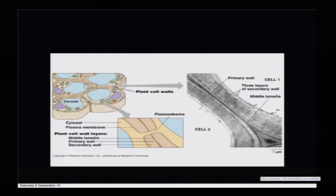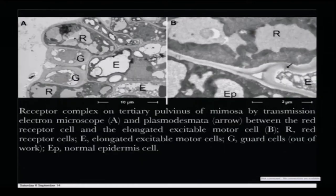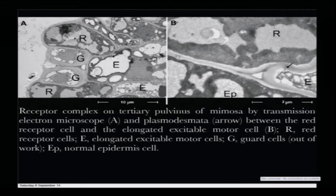This slide shows the detailed structure — how the xylem and phloem vessels are integrated into the plant cell wall structure, including plasmodesmata. This is the receptor complex on the tertiary pulvinus viewed by transmission electron microscopy: R stands for red receptor cells, G stands for guard cells, EP stands for normal epidermal cells, and then there are the excitable motor cells. You can see the plasmodesmata connectivity shown by arrows, and the elongated excitable cells (E) sitting out there.